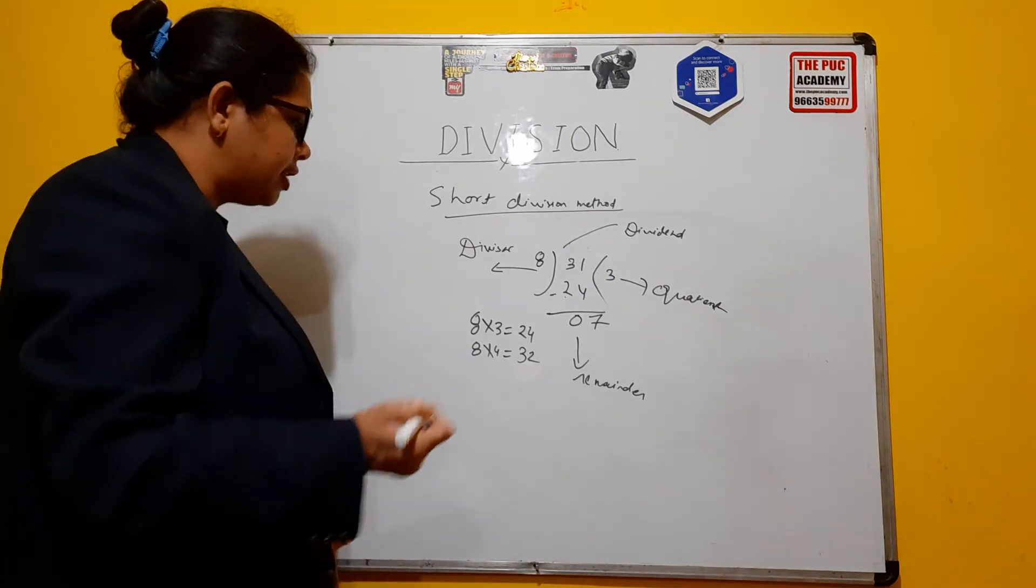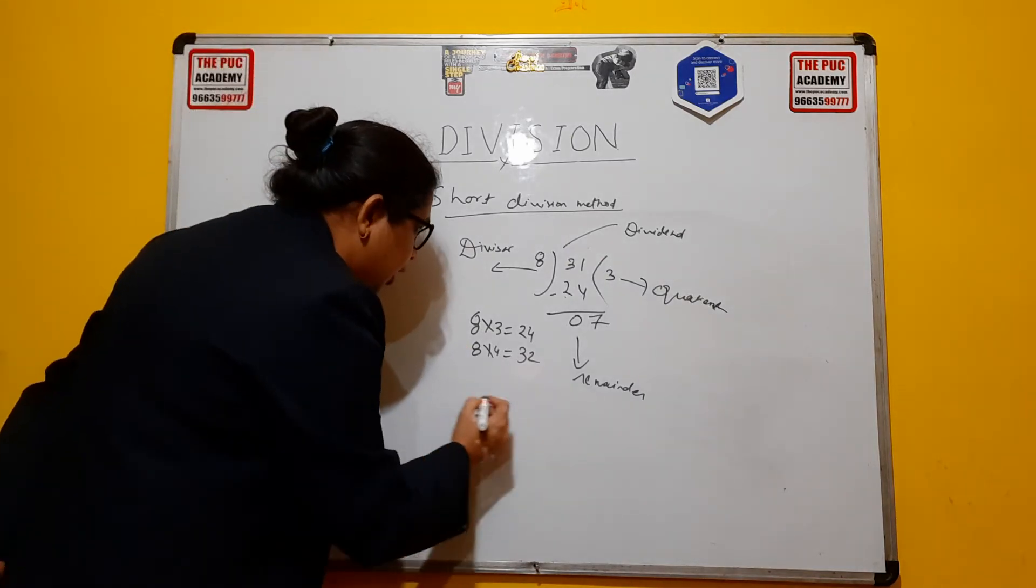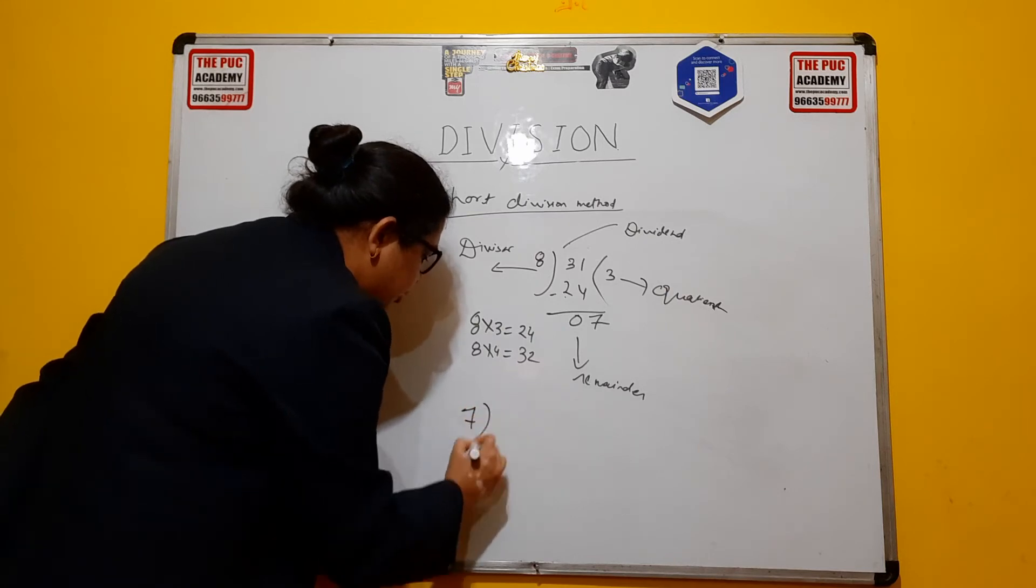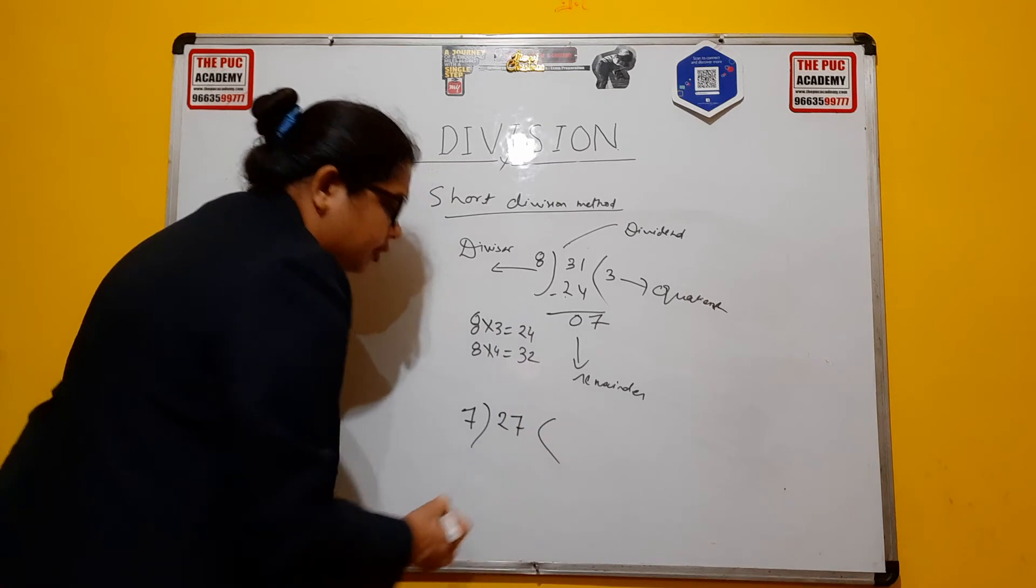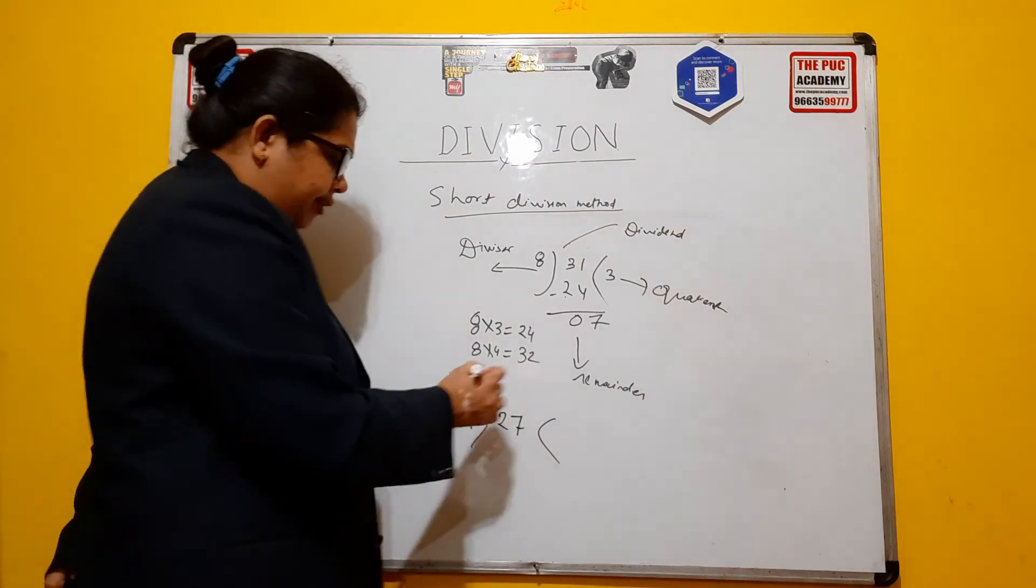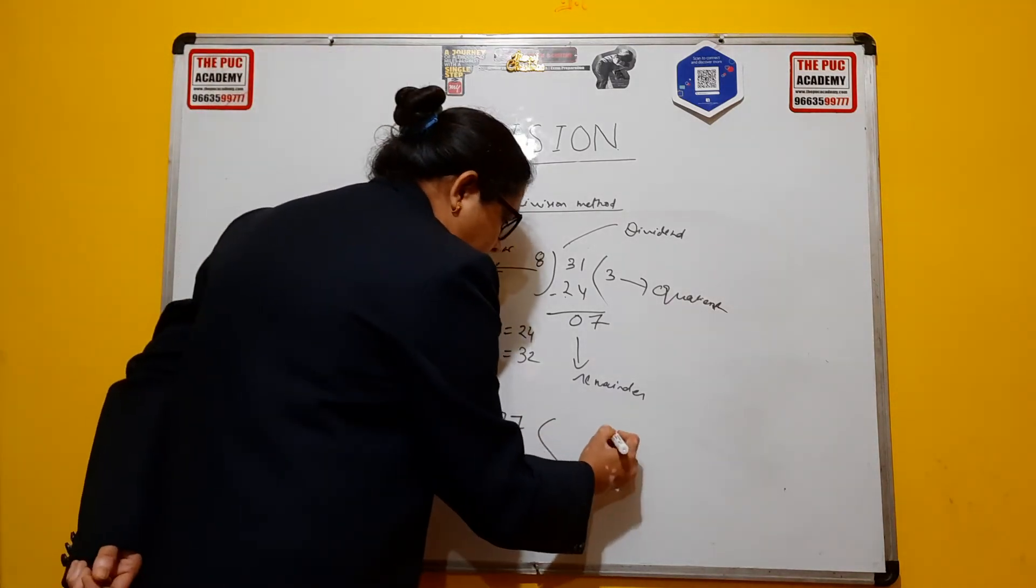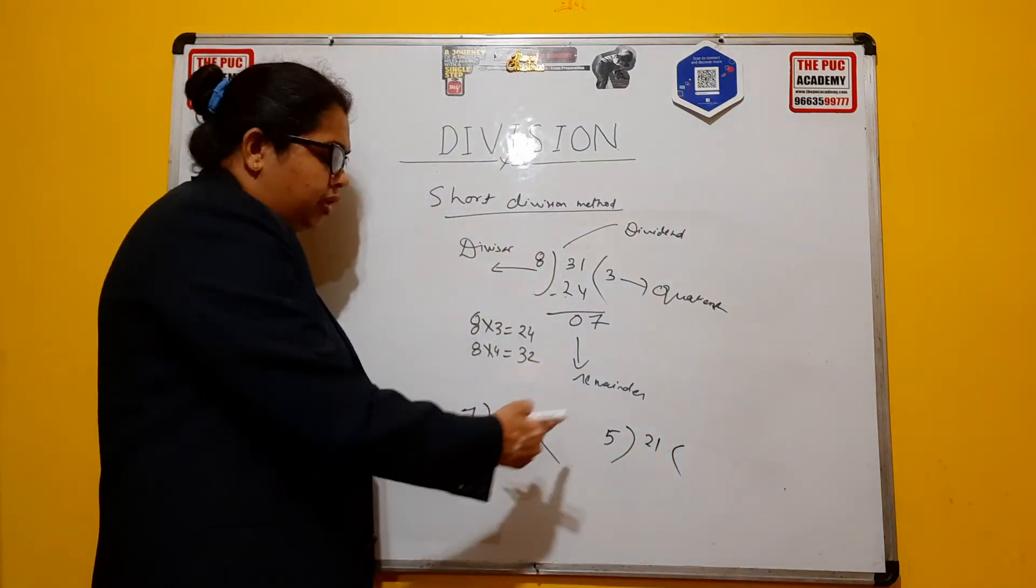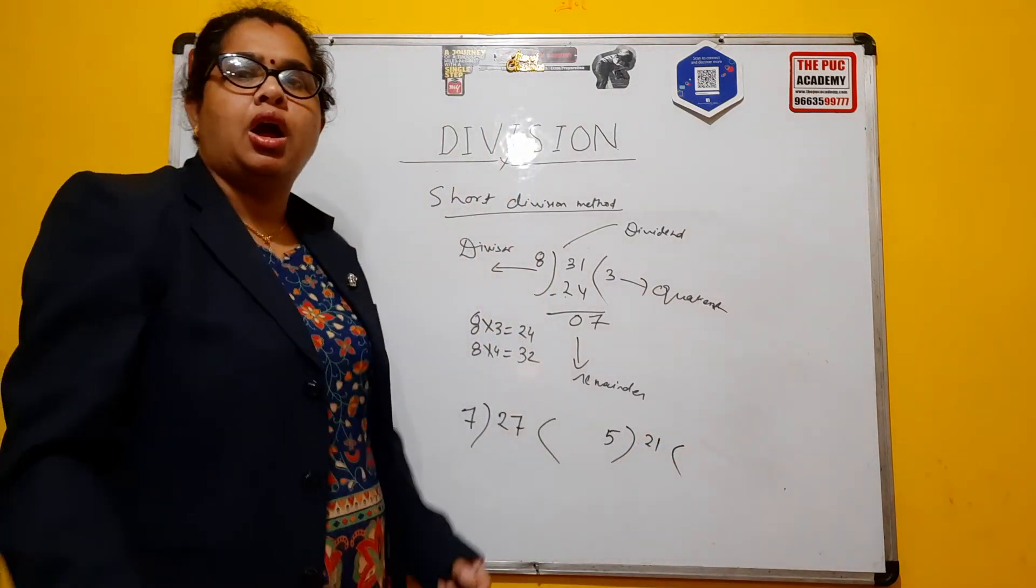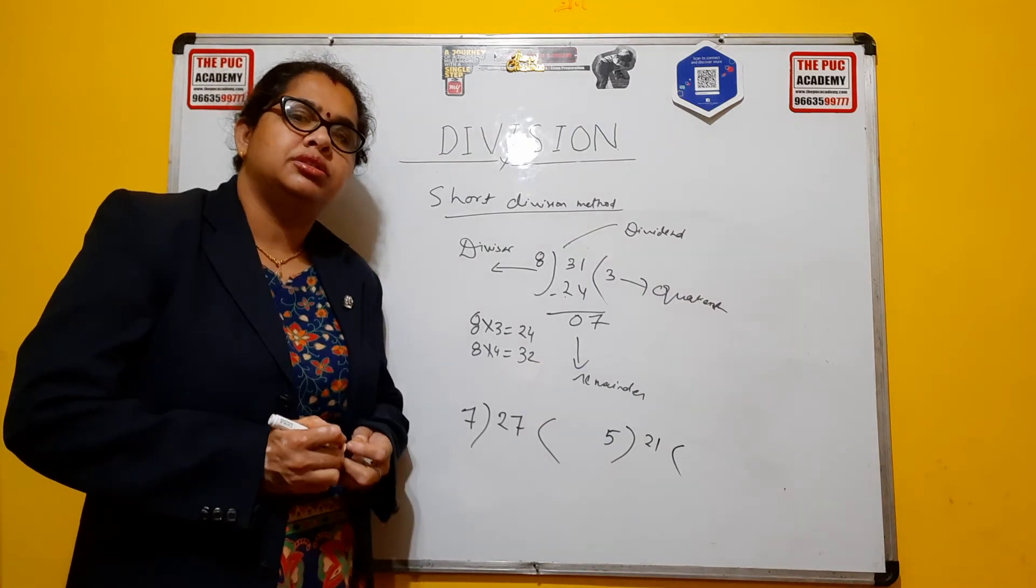Now we will take another method in the next video. Till that, you practice some small questions. Like you want to divide 27 by 7. Take this example: 27 divided by 7, and 21 divided by 5. These two divisions you try at your house. It will be very easy. Just practice it.